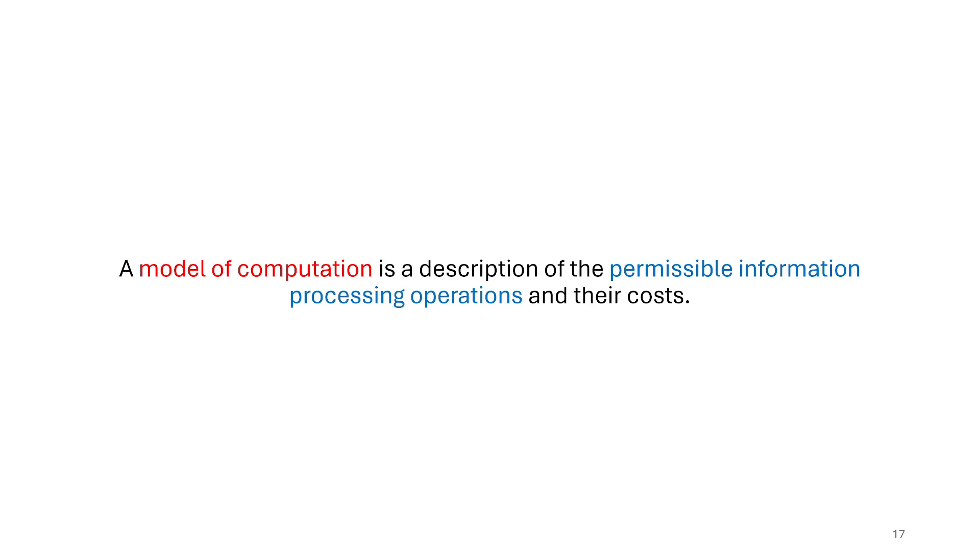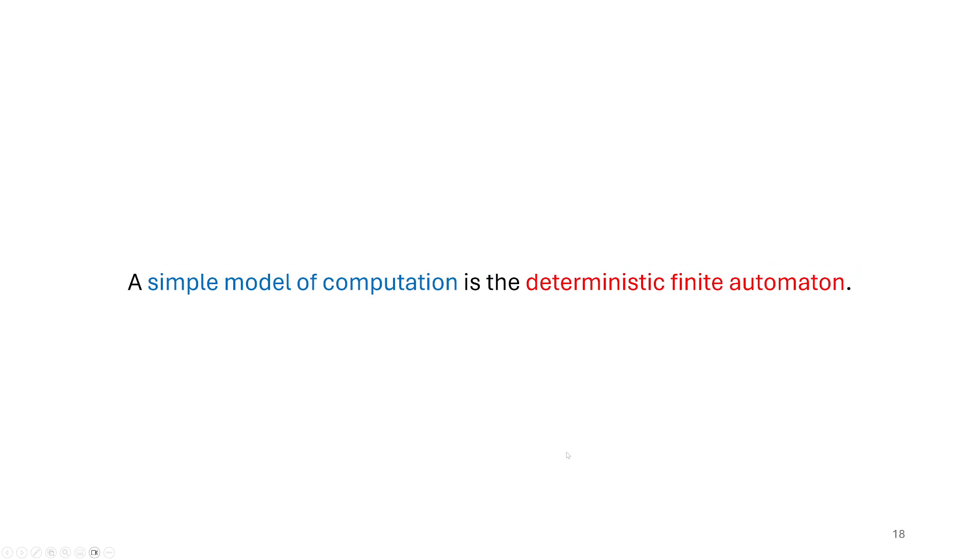So in our theoretical space, we can think of a model of computation as just telling us what are the allowable operations that we can perform on the data, on the information. And then maybe later on, not so much in this series, we can talk also about the cost of those operations and the cost of the computation.